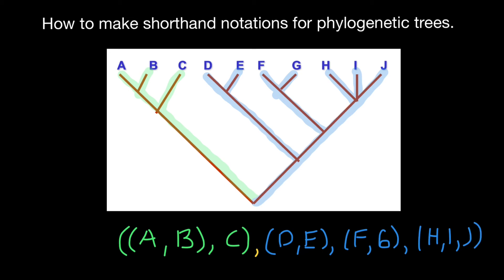We close parenthesis here and add one more parenthesis here, and one more here, and one more here. The last step is to add parenthesis here and here — three on this side, four on this side. This is shown in yellow color, meaning we have described the full phylogenetic tree.